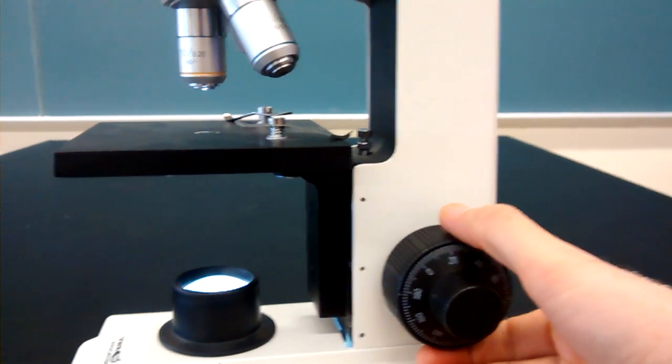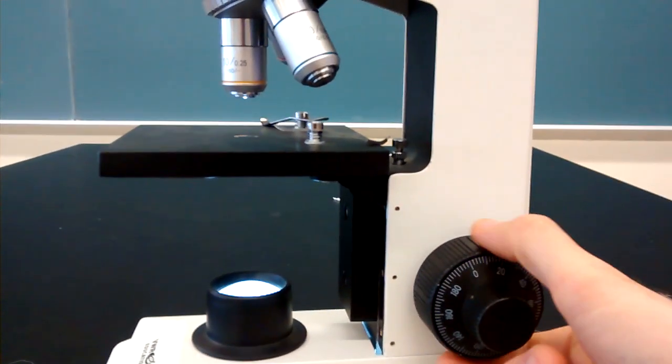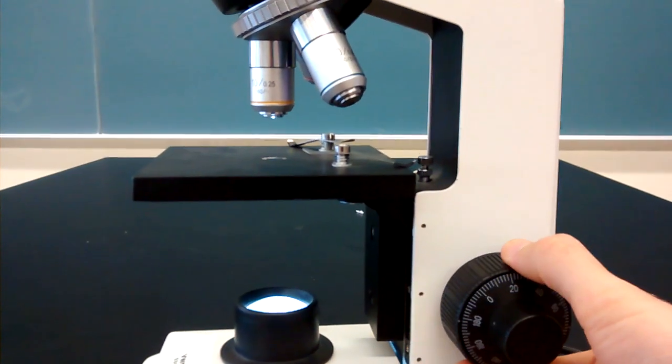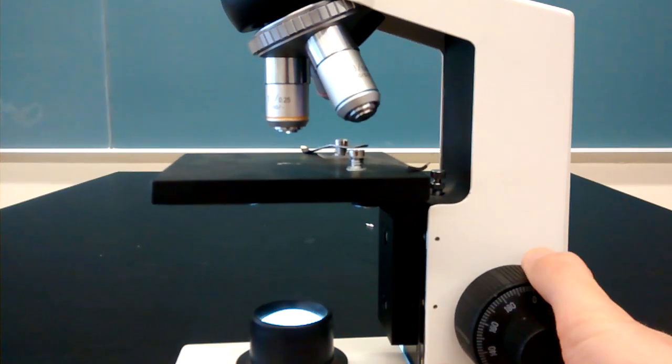Finally, we have these knobs. The larger knob, sometimes this is a separate knob, sometimes it's the outer knob. This is called the coarse adjustment knob. And as you can see, that causes the stage to move up and down.